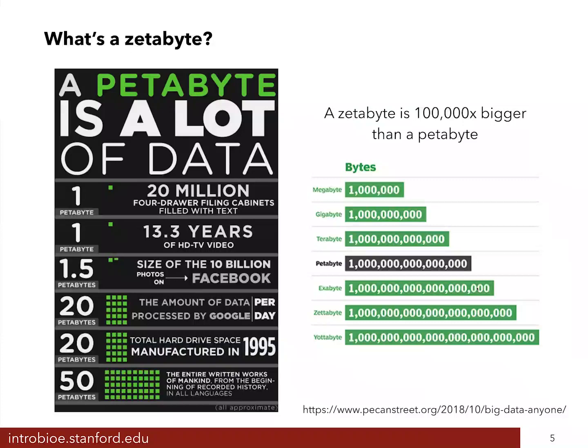A petabyte is the equivalent of 20 million filing cabinets completely filled with text — if you were to write really densely on a piece of paper and do that over and over again until you filled 20 million four-drawer filing cabinets, that's how much information is stored in a petabyte of data. It's also 13.3 years of HD video — just an unfathomably large amount of data. And we're already at the point where we're generating multiple petabytes of data each day, and a zettabyte of data is 1,000 times bigger than a petabyte.